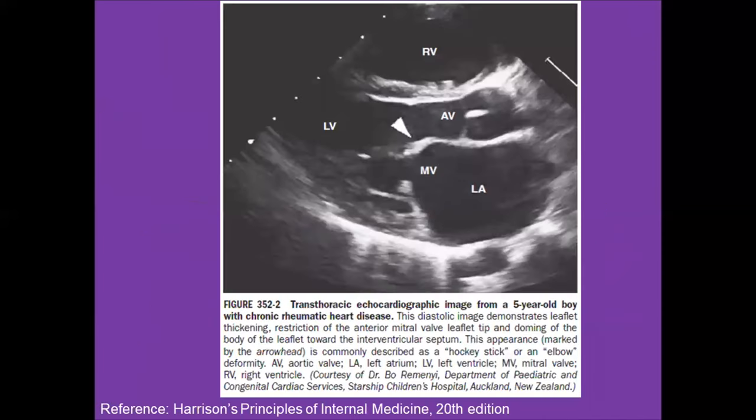This echocardiographic image from a five-year-old boy with chronic rheumatic heart disease demonstrates leaflet thickening of the mitral valve, restriction of anterior leaflet tip movement, and doming of the body of the leaflet towards the interventricular septum. This appearance is commonly described as a hockey stick or elbow deformity, which is a typical feature of rheumatic heart disease.